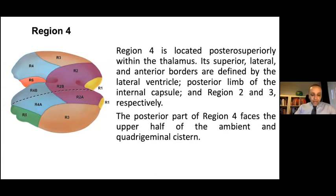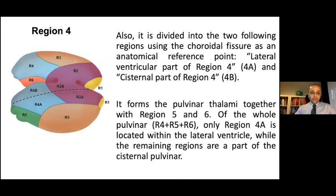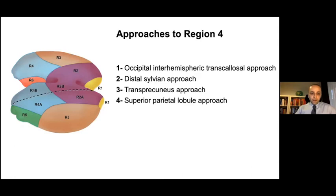Region 4 is located posterosuperiorly within the thalamus. Its superior, lateral, and anterior borders are defined by the lateral ventricle, posterior limb of the internal capsule, and regions 2 and 3, respectively. It is divided into two parts using the choroidal fissure as reference: the lateral ventricular part (Region 4a) and the cisternal part (Region 4b). Region 4 forms the pulvinar thalamus together with regions 5 and 6. For reaching Region 4, we used the occipital interhemispheric transcallosal approach, distal Sylvian approach, transprecuneus approach, and superior parietal lobule approach.